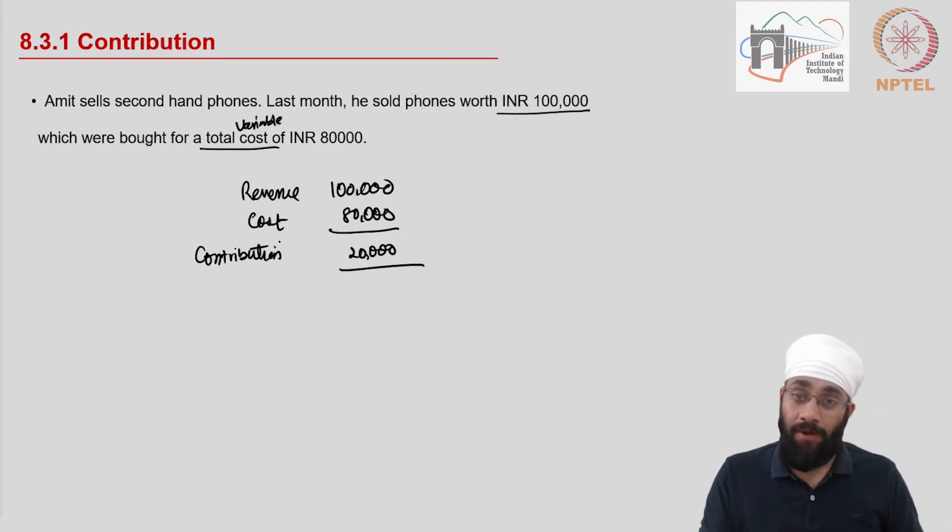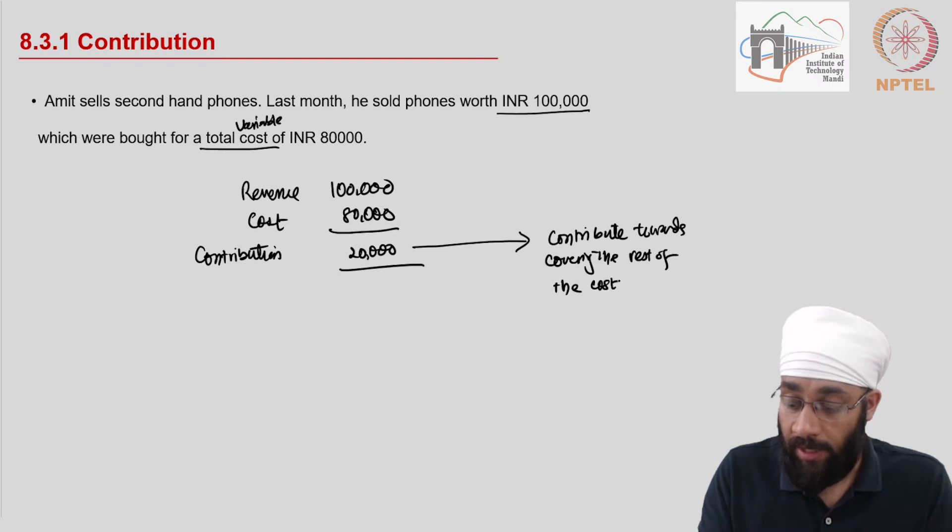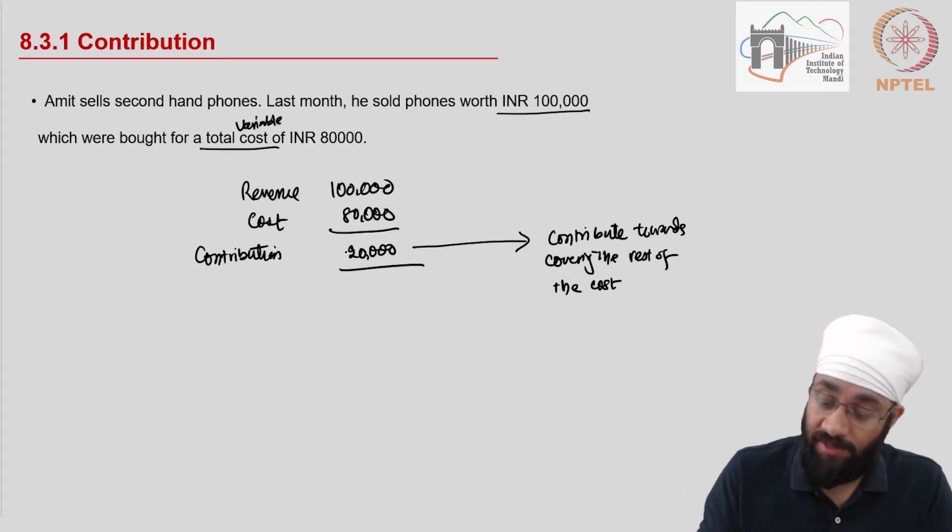Now why do we call it a contribution? The reason that we call it a contribution is that this money is going to contribute towards covering the rest of the costs. Right now we are only deducting the variable cost, and this contribution, whatever is left after paying the variable cost, that money is going to be used towards covering the rest of the costs.